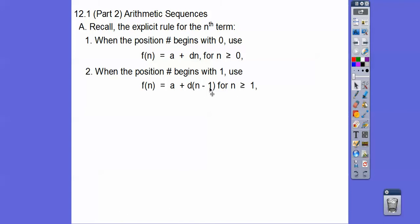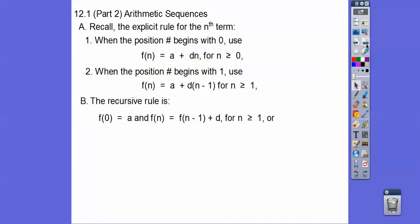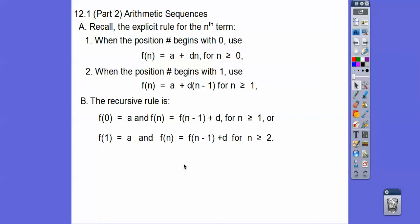Just think of this — one minus one is zero, so it's the same formula. Now the recursive rules: if it starts at zero, F of N equals F of (N minus one) plus whatever D is. And if it starts at one, same formula, but notice it's for N greater than or equal to one — and if it starts at one, then N is greater than or equal to two.